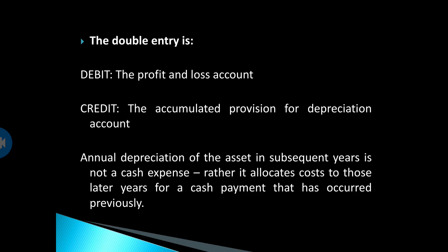What is the double entry for recording depreciation? The double entry is very clear. Remember, depreciation is an expense, so all expenses have to be debited to the statement of profit and loss. When recording depreciation, always debit the profit and loss account and credit the accumulated provision for depreciation account. You can also debit what we call the depreciation expense account. Remember, depreciation is not a cash expense — we don't pay for depreciation. It is about allocating the cost of the asset to later years for a cash payment that has already occurred previously.